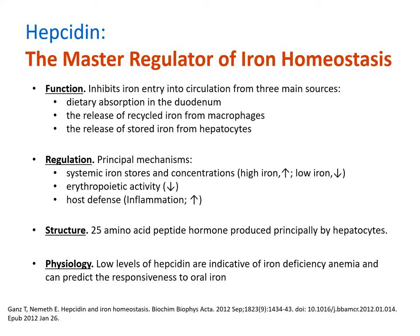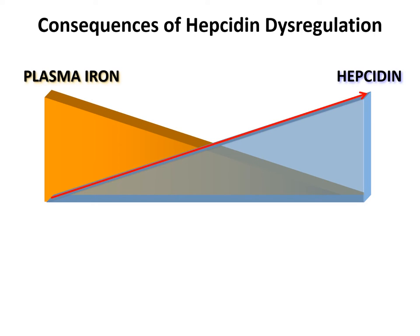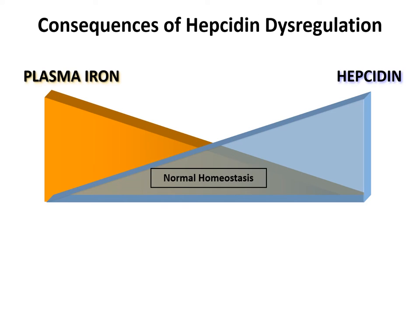The route of iron supplementation can be predicted by indicating a patient's responsiveness to oral iron. When hepcidin levels decrease, plasma iron levels increase, and when hepcidin levels increase, plasma iron levels decrease. Normal iron homeostasis is achieved when there is a balance of appropriate levels of plasma iron and hepcidin for physiological needs.